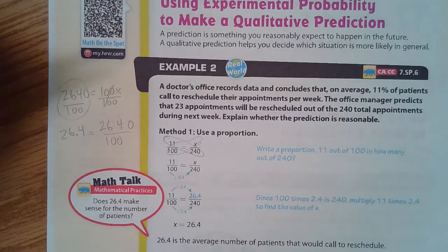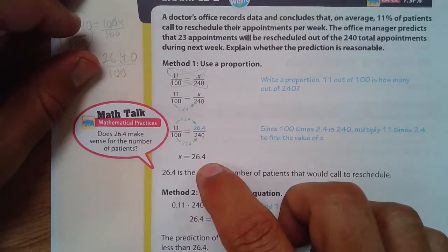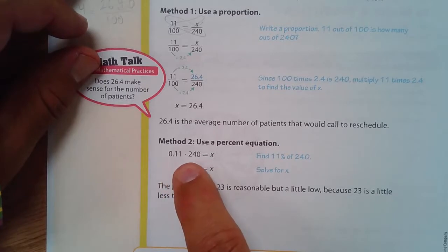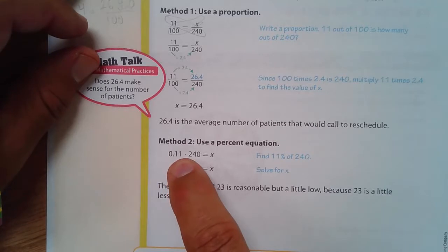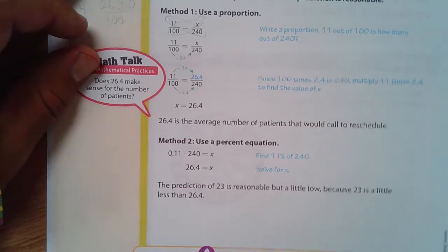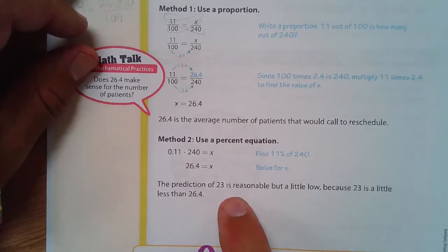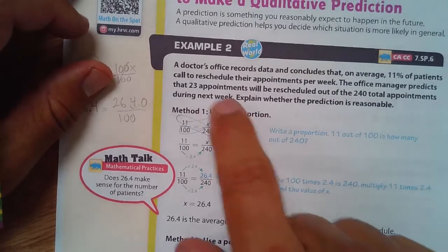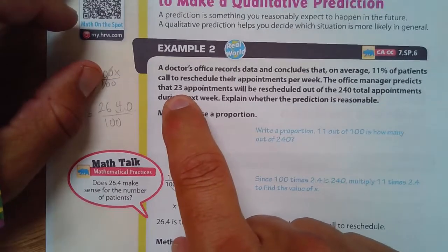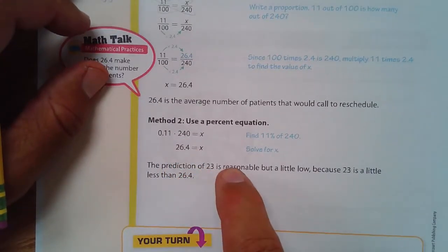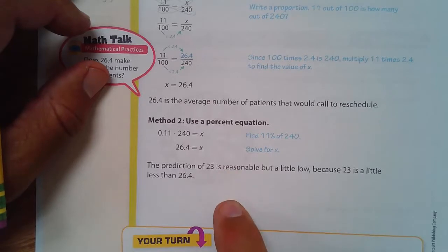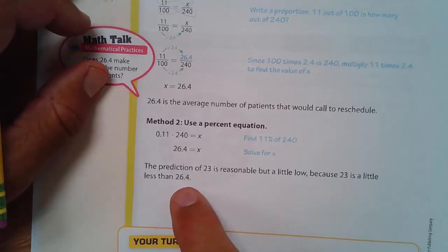Easy to divide by 100 — just move the decimal two places to the left. Or using the decimal method: 11% of 240 is 0.11 times 240, which gives 26.4. So the prediction of 23 is reasonable, but a little low. The office manager predicted 23 appointments, which is a little less than the 26.4 that the data suggests. But it's reasonable, because 23 is close to 26.4.